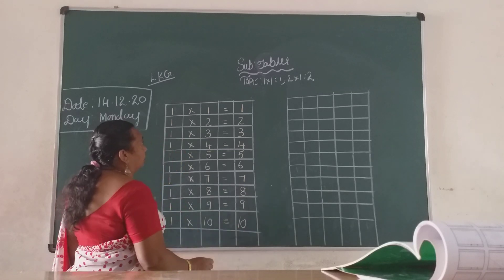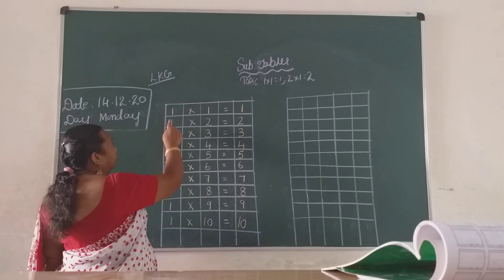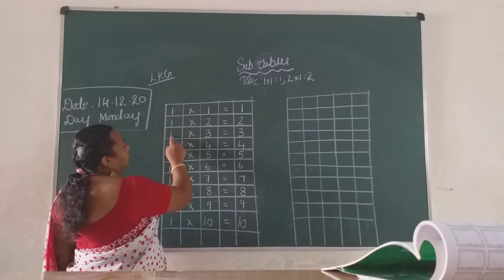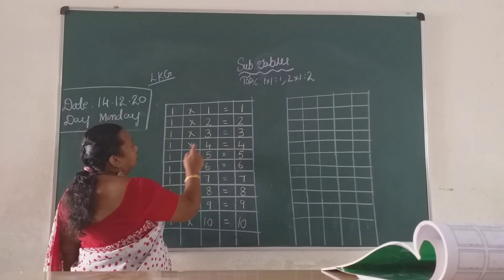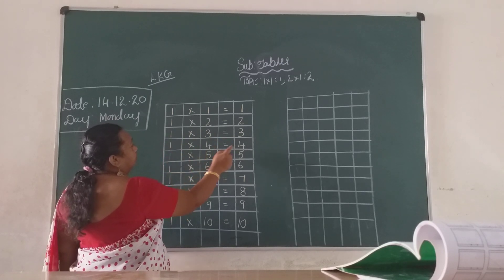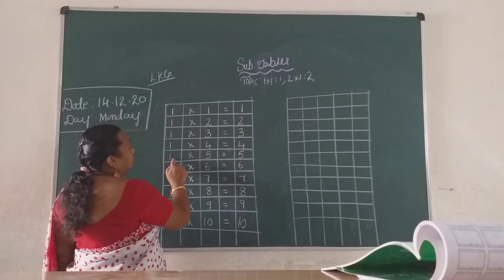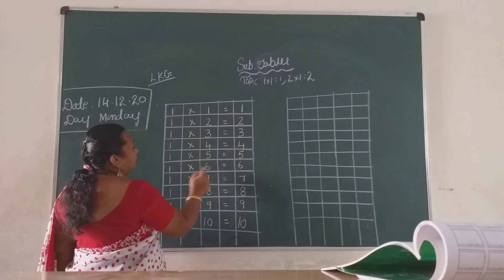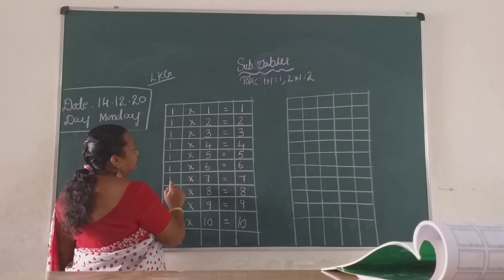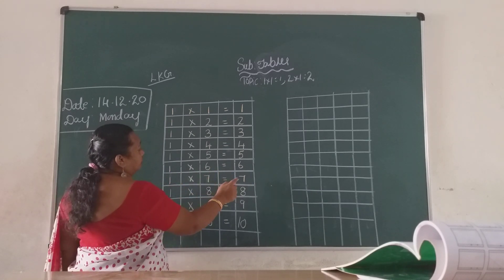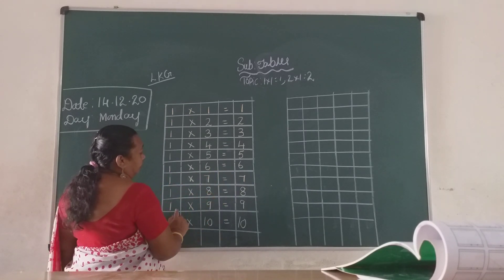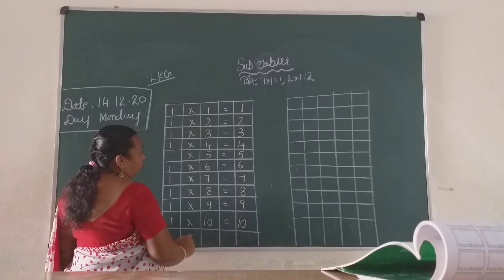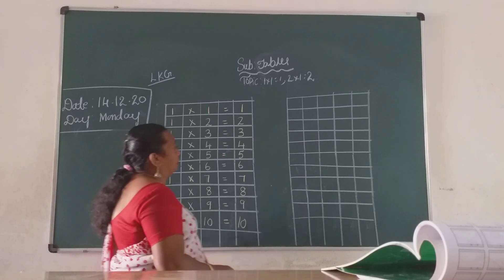Say children once again. One ones are one. One twos are two. One threes are three. One fours are four. One fives are five. One sixes are six. One sevens are seven. One eights are eight. One nines are nine. One tens are ten.